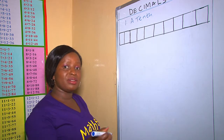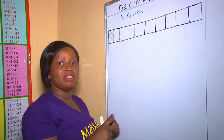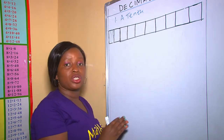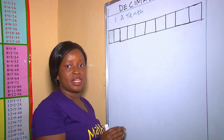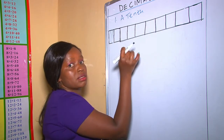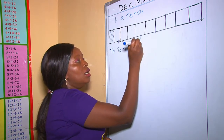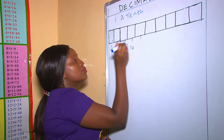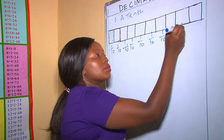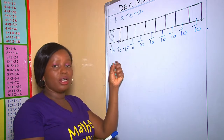In this diagram there are 10 parts. Let's count together: one, two, three, four, five, six, seven, eight, nine, ten. This bar of chocolate has been divided into 10 parts. Out of the 10 parts, one is shaded. If I was to share this bar of chocolate with 10 students, what fraction will each child get? Because there are 10 parts, each child will get a fraction called 1 over 10.